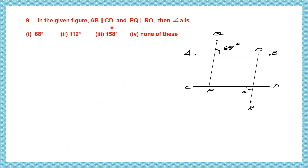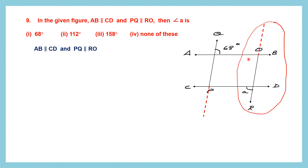Question 9. In the given figure, AB is parallel to CD, and PQ is parallel to RO. Let's extend these lines to understand clearly. We are asked to find the value of angle A. Taking only a portion of the figure, we have two parallel lines cut by a transversal — angle A should be connected to some other angle. But no other angle is directly given here, so we take the help of angle 68.